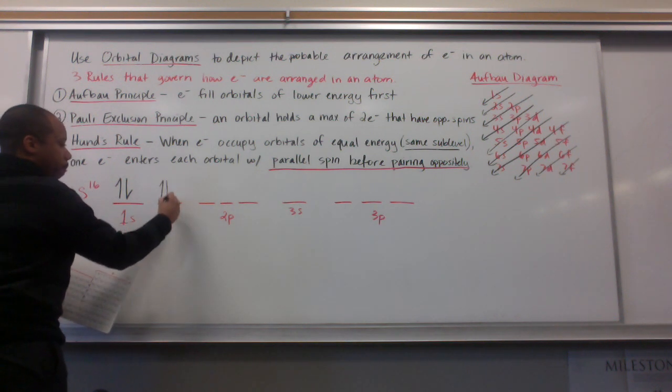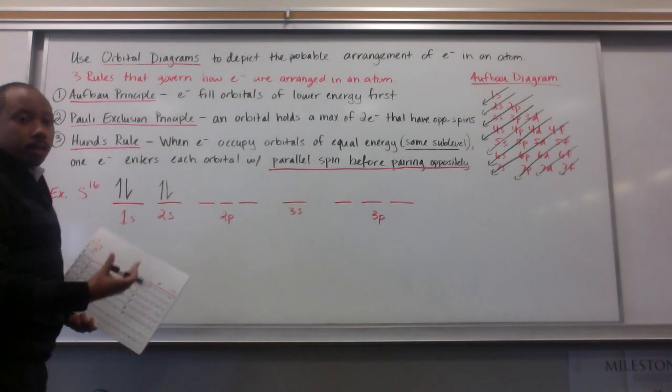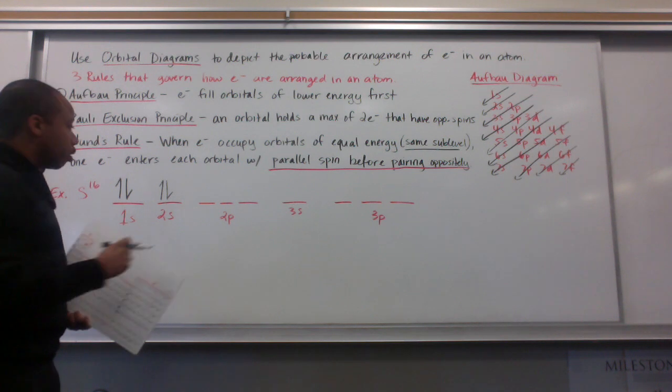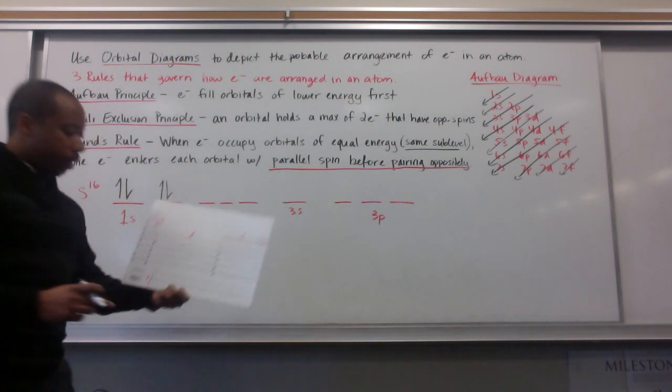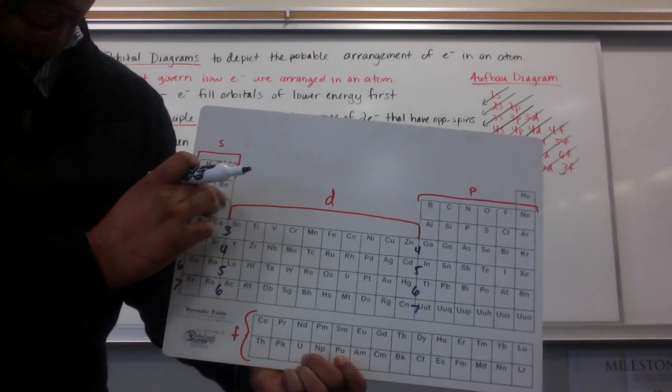And now, I'm at 2s, lithium and beryllium. Remember, this one line means I have one orbital. The s sublevel has one orbital, one seat in our movie theater. So, one electron for lithium, another electron for beryllium.